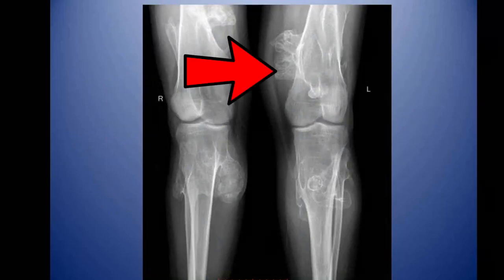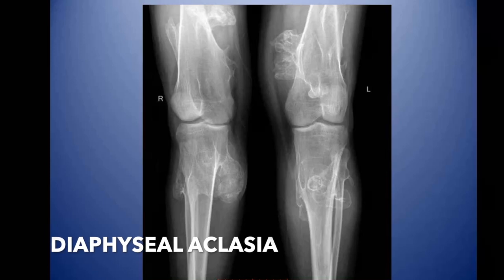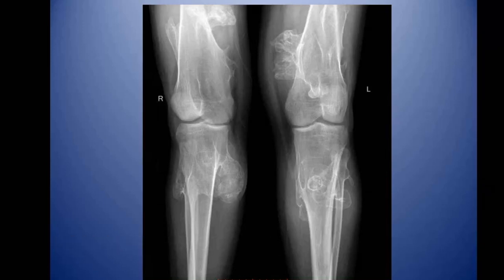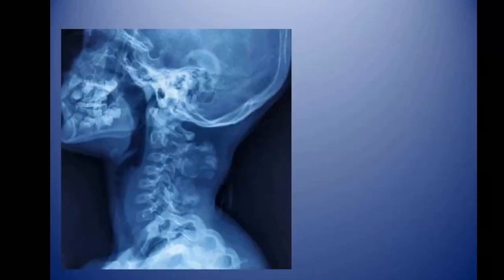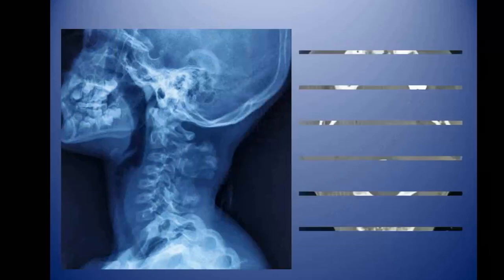This is the radiograph showing multiple sessile and pedunculated osteochondromas involving bones surrounding the bilateral knee joint — this is the case of diaphyseal aclasis, and the rate of malignant transformation in diaphyseal aclasis is around 20%. This is a case of solitary pedunculated osteochondroma with direction away from the joint. This is a case of osteochondroma involving the neural arch of the cervical spine, along with its CT.